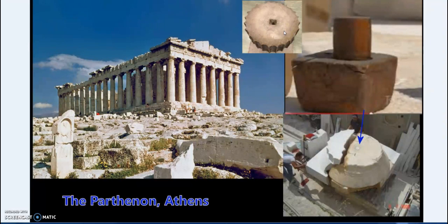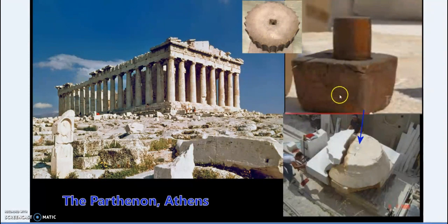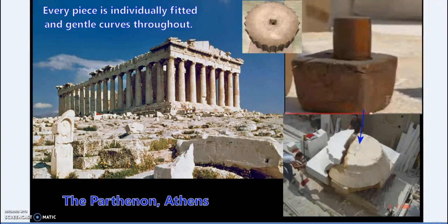Not only were these column drums so finely fitted as to form airtight seals preserving timber over 2,500 years, but the whole Parthenon has every piece individually fitted with gentle curves throughout the structure. It's built of pentelic marble, which is essentially the equivalent of the harder limestone of Egypt — marble and limestone are very comparable. Pentelic marble is not a soft material; it's relatively hard, which is why people have lovely marble kitchen tops. These later cultures, which don't get the exposure they deserve, were doing amazing precision stonework.